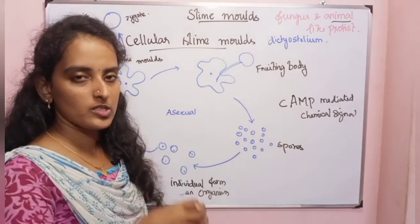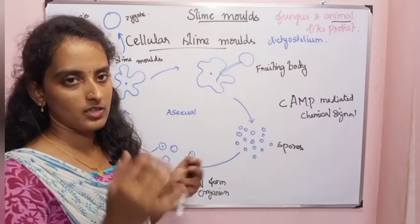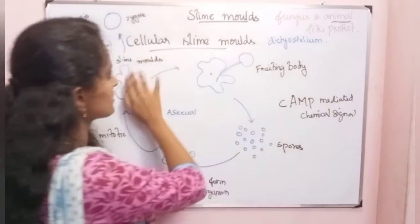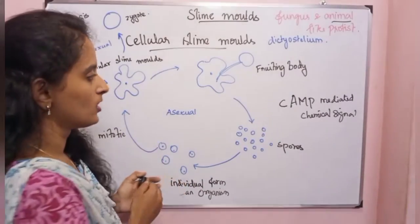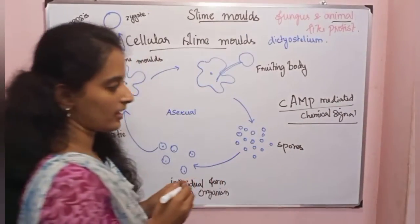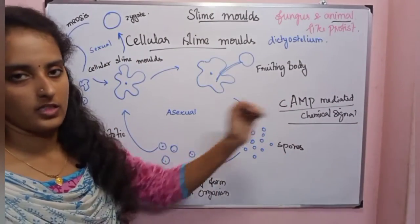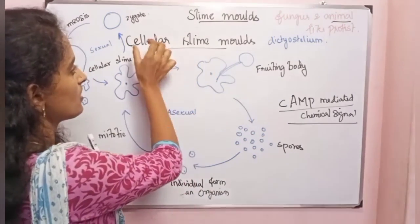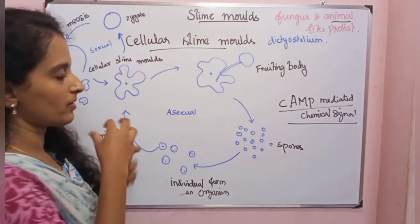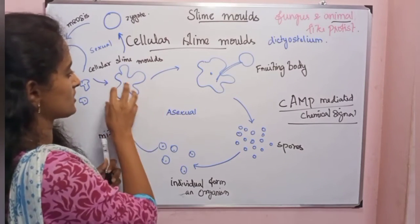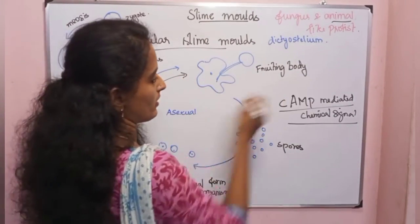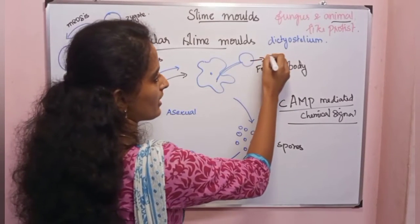Individual unicellular slime molds respond to the CAMP chemical signal, aggregating together. Under unfavorable conditions the aggregated colony forms a fruiting body with sporangia. In cellular slime molds, the vegetative stage is haploid — unlike acellular slime molds where the vegetative stage is diploid.